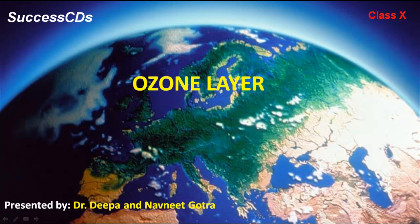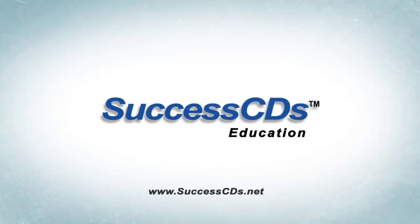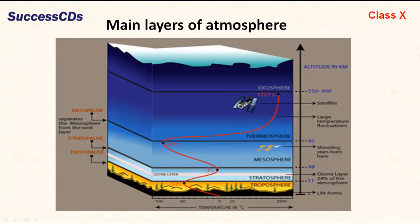In this lecture, we will discuss about the ozone layer. First of all, we should know the main layers of the atmosphere. These are: troposphere, the lowermost; stratosphere; mesosphere; thermosphere; and exosphere, the topmost. The ozone layer is present in the stratosphere.